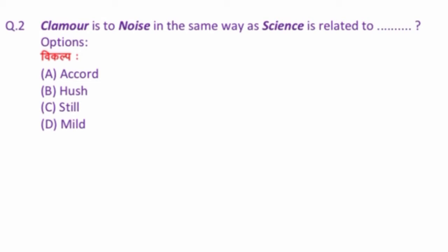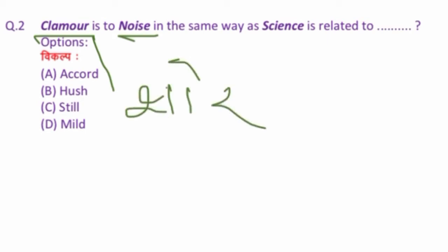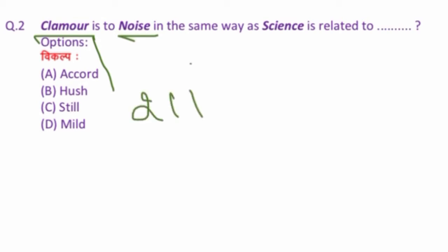Question number two: Clamor is to noise in the same way as silence is to — now here we need to understand the meaning of 'clamor' first. Clamor means 'shor' (noise/din). Noise also means 'shor'. So both have the same meaning — both mean shor. So silence is to...